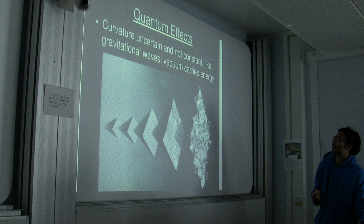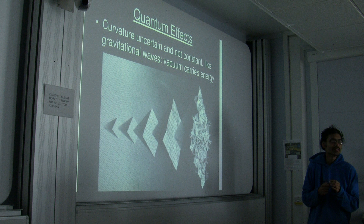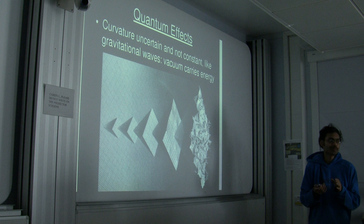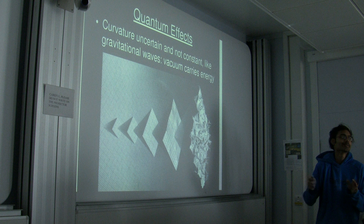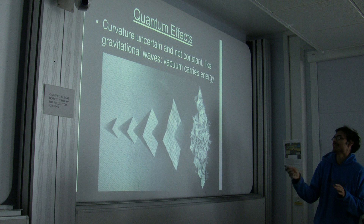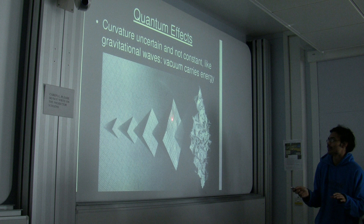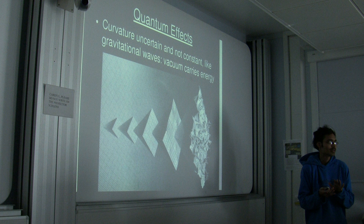Quantum fluctuations of what? The degrees of freedom in spacetime — we don't exactly know what they are. But there must be something causing the gravitational field, and it can't have a particular fixed value; it must be uncertain. The vacuum fluctuations of this sort do actually carry a small amount of energy as well.